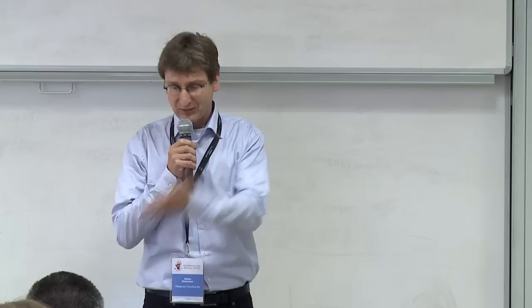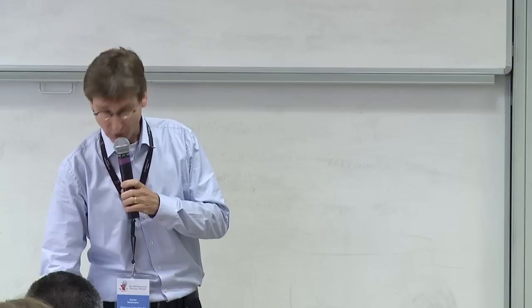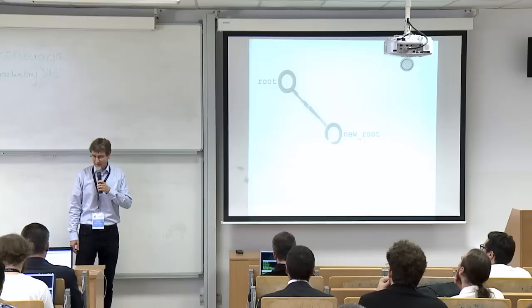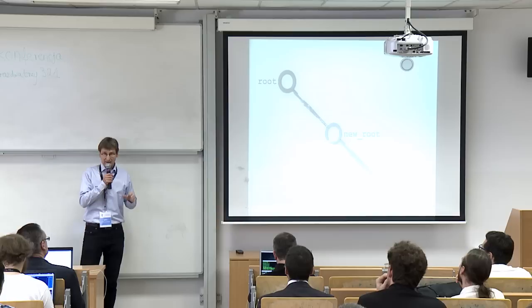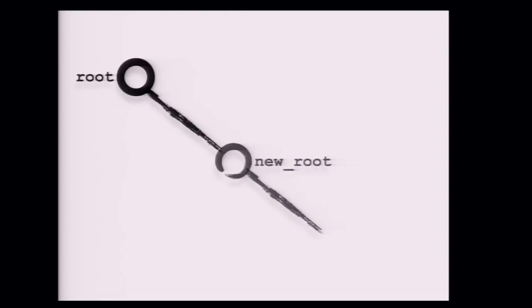We have the root node where we hang off our filesystems, and we always have the root filesystem at least. On small systems we only have that. That filesystem will then have somewhere down the line a directory — which for this presentation I'll always call 'new_root'. It's a directory on the root filesystem. On there you will then mount another filesystem. Notice it covers the directory node — and this is actually part of the complication we'll see later.